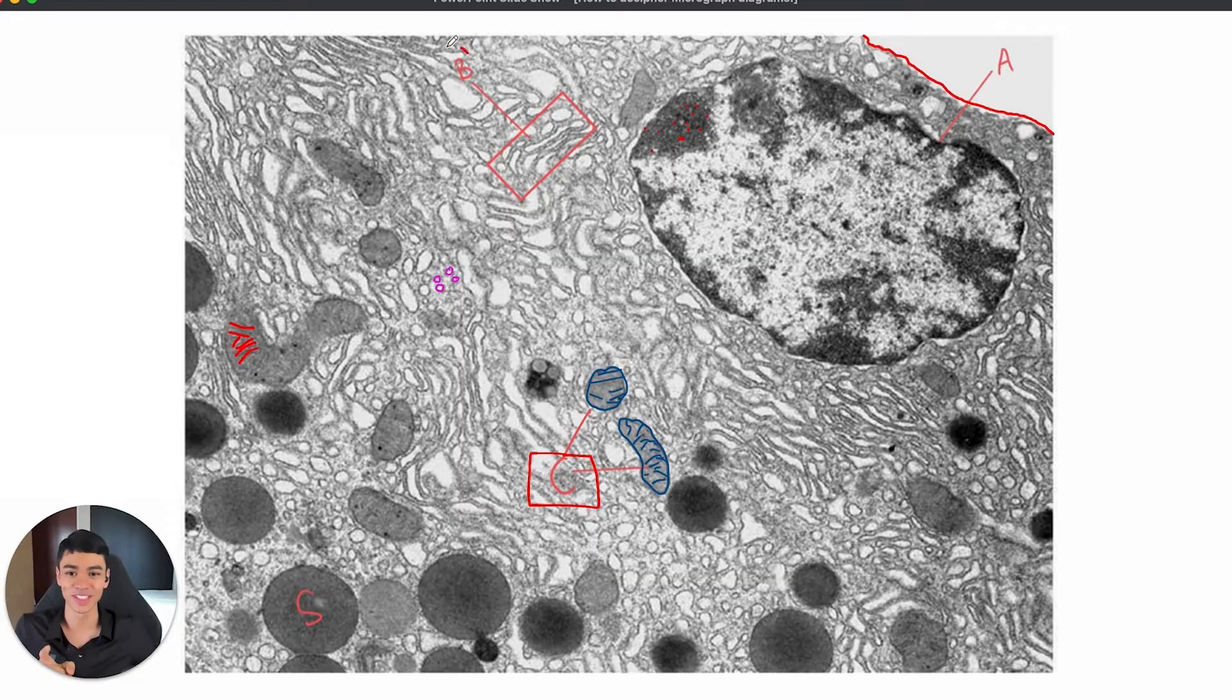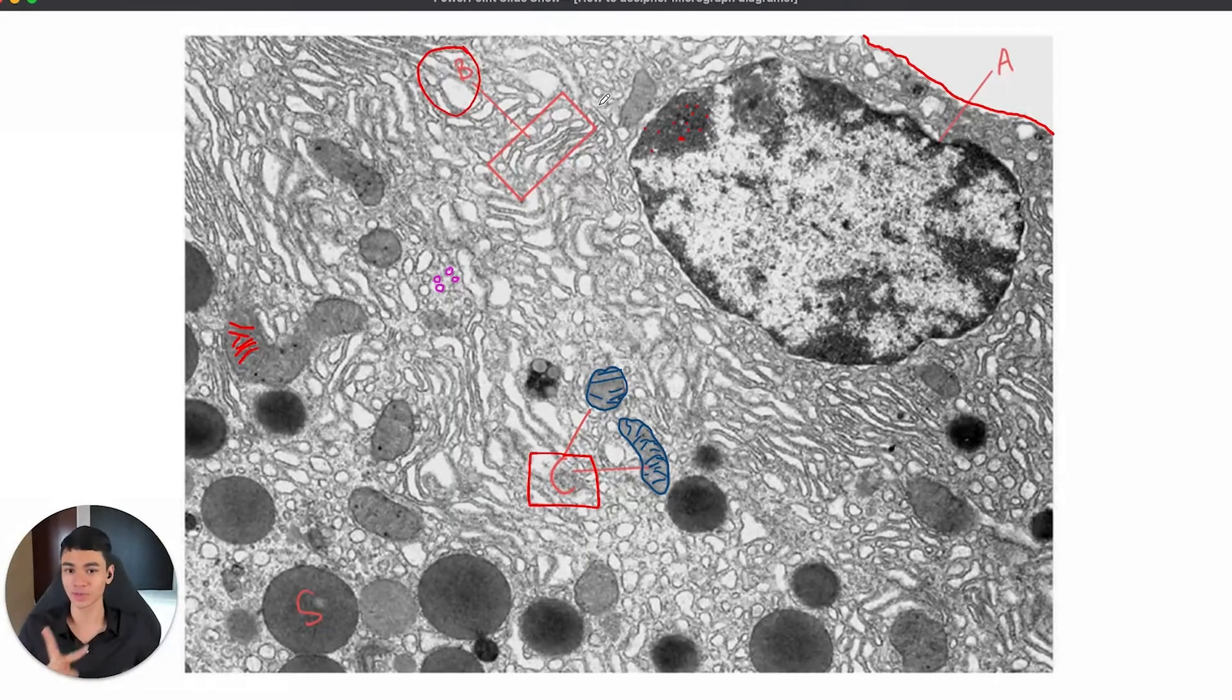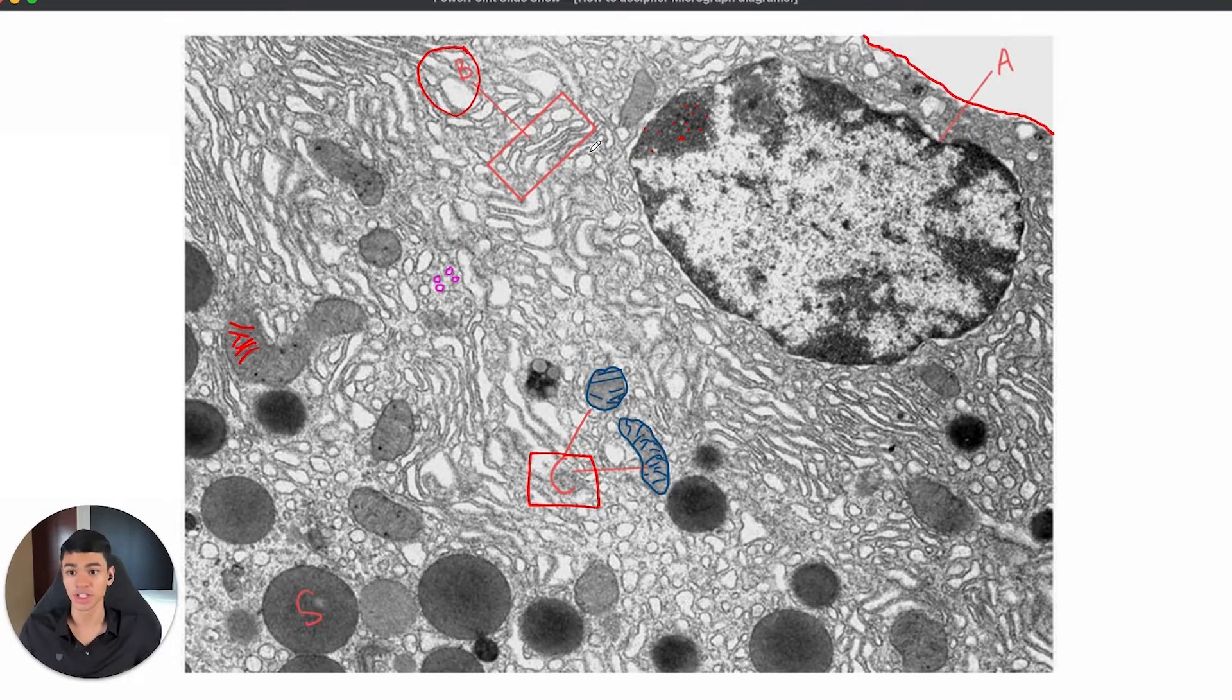Okay, last one. What is B? B is the difficult one. So there are two possible answers that people will think of. One is maybe it's a Golgi apparatus. Because we know the Golgi apparatus or Golgi body is made of many of these stacks, right? Something like this over here, which is why people might choose Golgi body. But this is the trick.